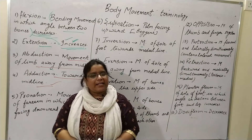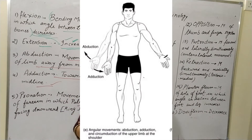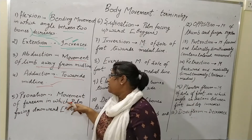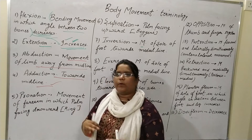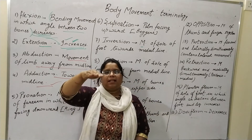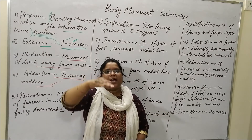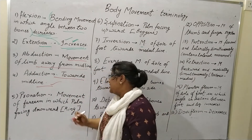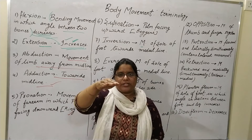In the diagram itself you can see very easily the abduction and the adduction. Now, pronation — the movement of the forearm in which the palm is facing downward. The palm facing downward is the pronation, and this is like a king-like position. This is the pronation.